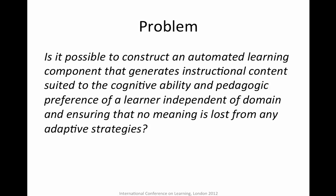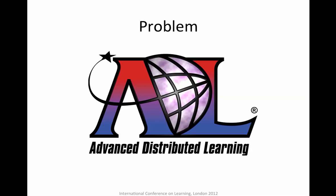When you look at the terms 'cognitive ability' and 'pedagogic preference,' they mean slightly different things depending on who you're talking to. A neuroscientist, a psychologist, and a computer scientist will all have different definitions. This project took more of a computer scientist approach, meeting in the middle between the neuroscientist and psychologist perspectives.